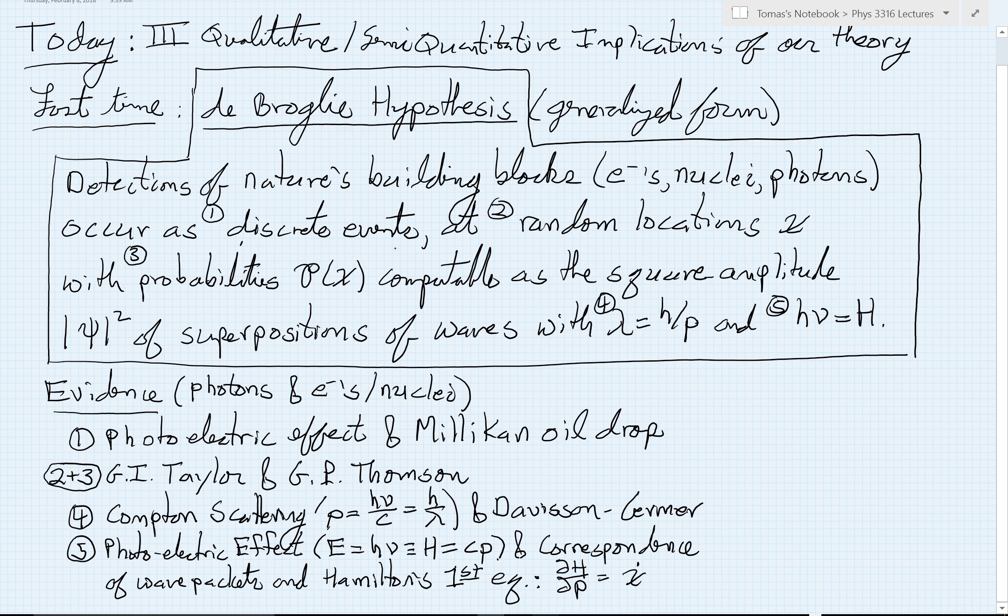So the first thing is that these detections happen as discrete events. Now, the discreteness of the photons, that was G.I. Taylor's, that's the photoelectric effect, right? Where we see the individual photons knocking electrons out of the cathode. The discreteness for the electrons is very nicely shown in Millikan's oil drop experiment. So that's the discreteness.